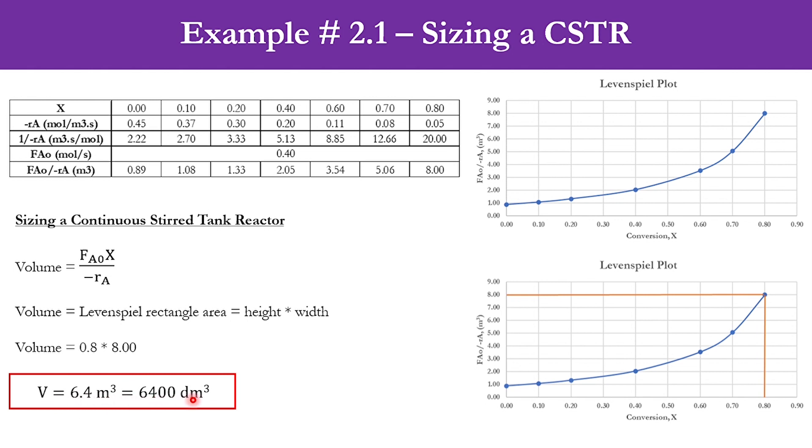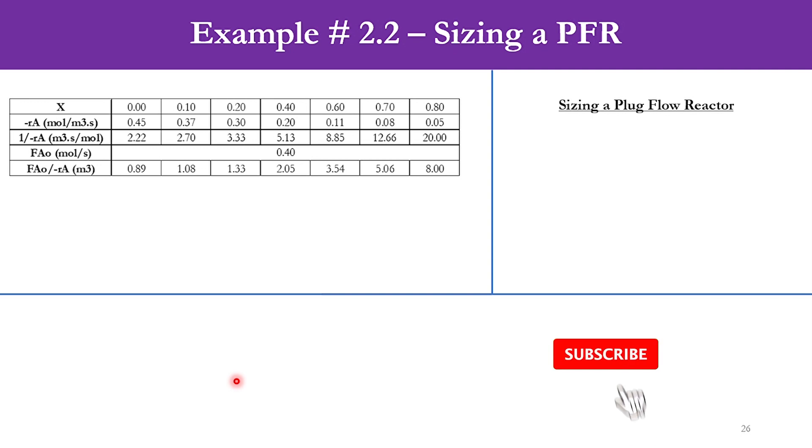Today we will size a PFR and see how we can calculate its volume using the same conditions: x, minus RA, 1 over minus RA, FA0 = 0.4, and FA0 over minus RA for different conversions. The volume of PFR is FA0 integral from 0 to x of dx over minus RA, or volume equals integral from 0 to x of FA0 over minus RA into dx.